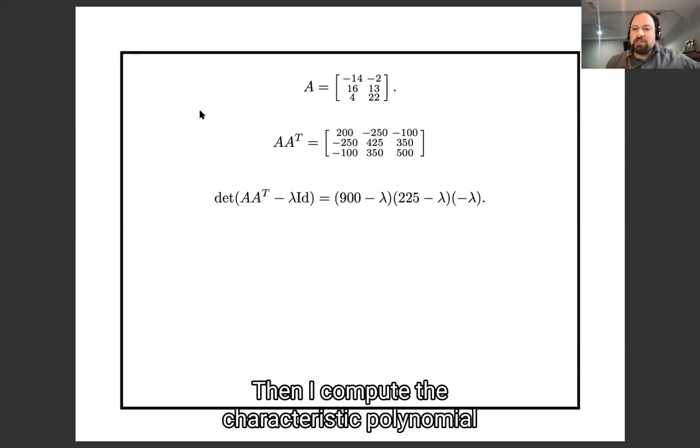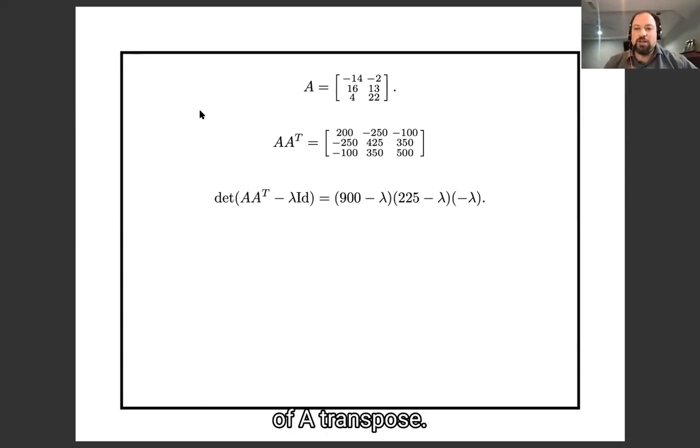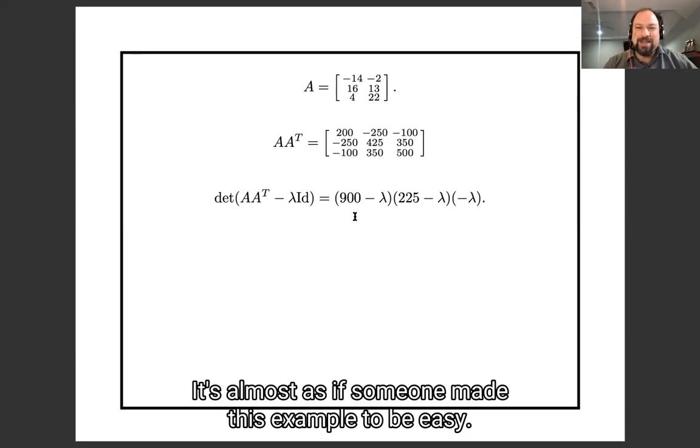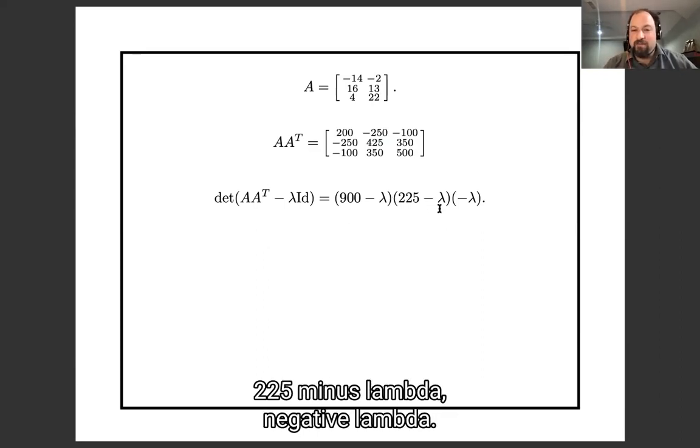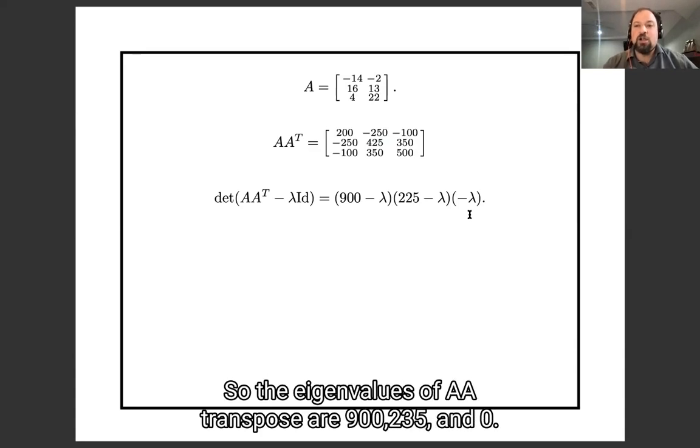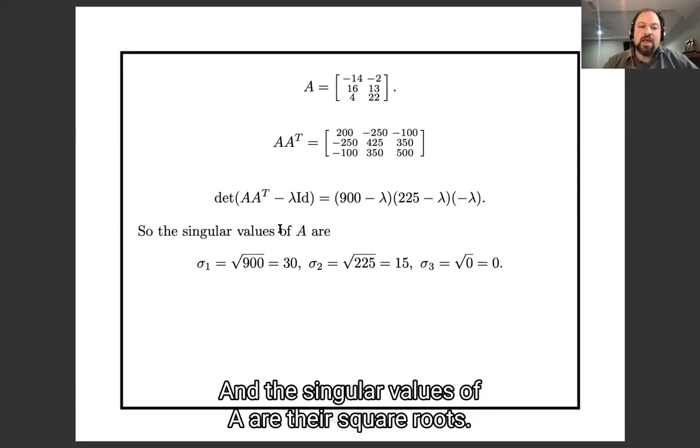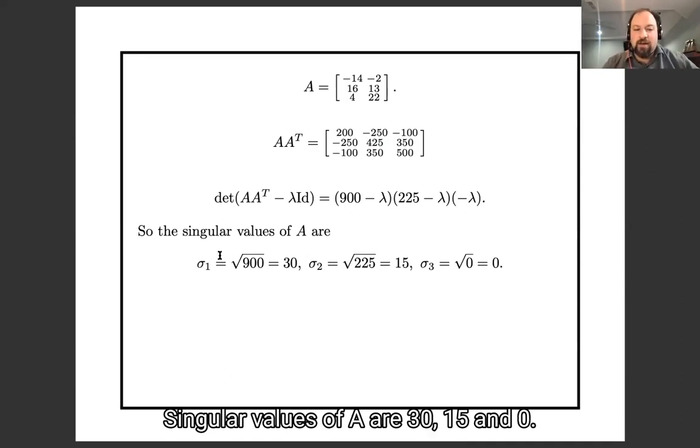Then I computed the characteristic polynomial of A, A transpose. It's a cubic, but how lucky for us, it's almost as if someone made this example to be easy, the cubic factors. 900 minus lambda, 225 minus lambda, negative lambda. So the eigenvalues of A, A transpose are 900, 225, and 0. And the singular values of A are their square roots. Singular values of A are 30, 15, 0.